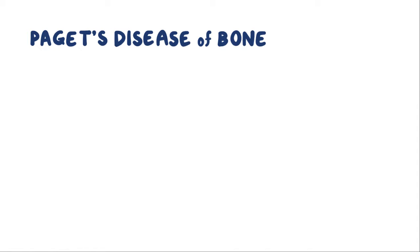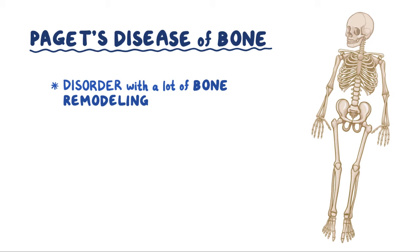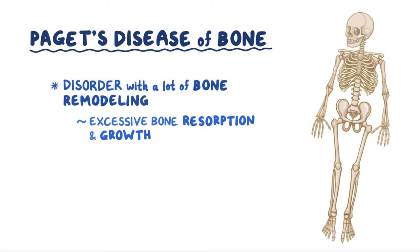Paget's disease of bone is a disorder in which there's a lot of bone remodeling that happens in some regions of the bone. Typically, there's excessive bone resorption followed by excessive bone growth, and that leads to skeletal deformities and potential fractures.